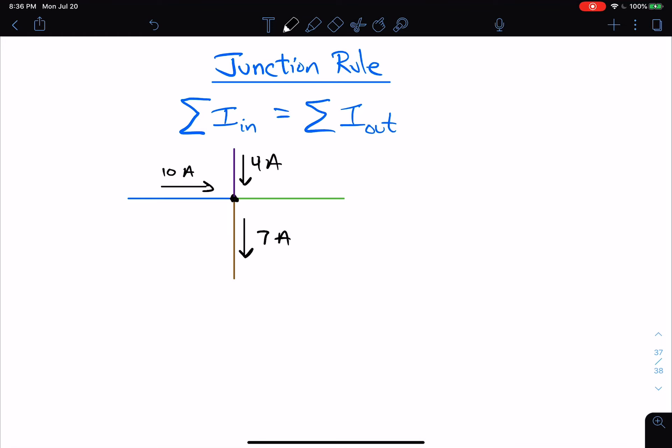So if I set this up, some of the current's coming in. Well, I have two currents coming in. This 10 amp is coming, going towards this point, the junction. The four amps is also going toward the junction. So that means I have 10 plus four. That has to equal, I have the seven that is leaving, that's going away from the junction. So that has to equal a seven.